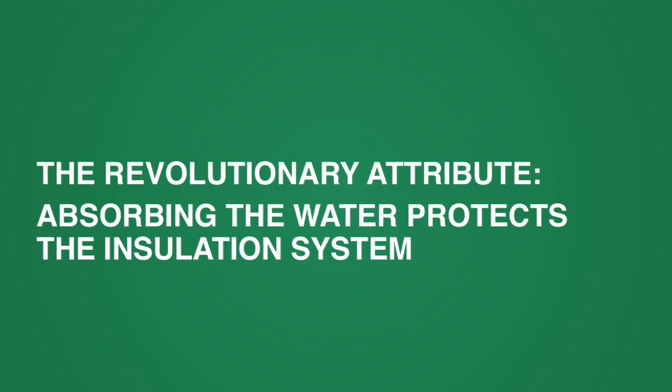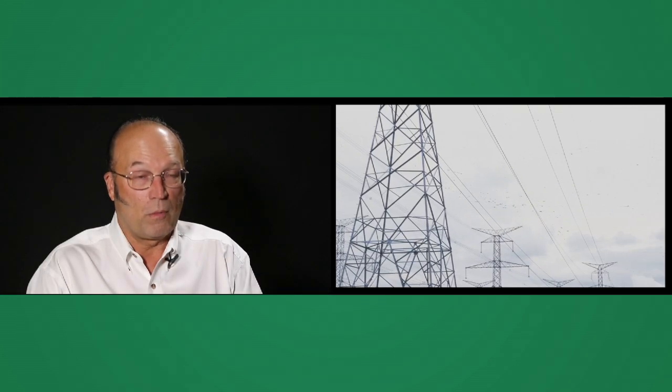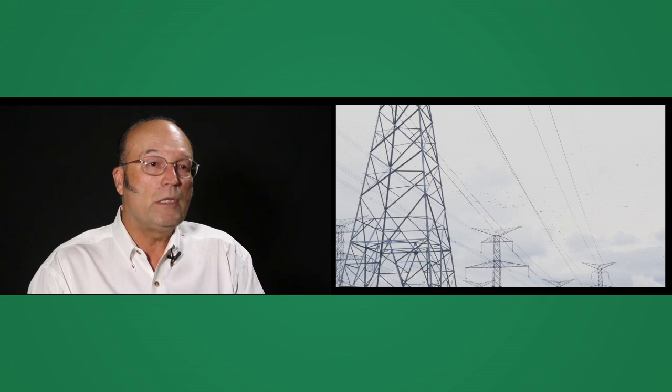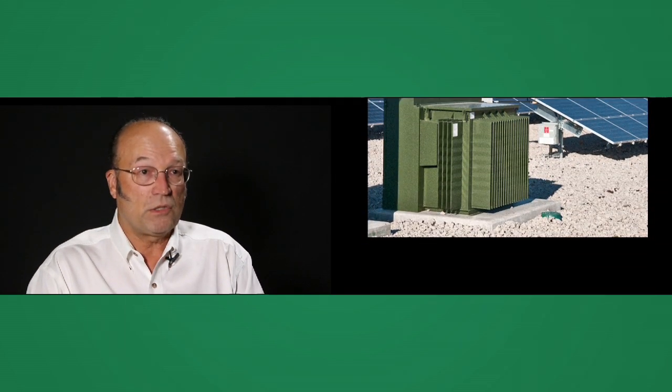A very key attribute of FR3 fluid is its ability to absorb water from the insulation system of a transformer. The solid insulation in a transformer made from cellulose is what determines the life of the transformer. So anything we can do to protect the solid insulation, we're protecting the transformer.